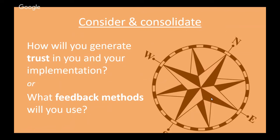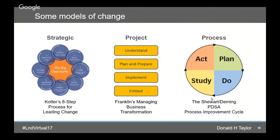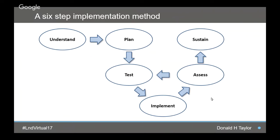We do need a method. Talking to people, I've come up with one model — not patented, anyone can use it, simply a reflection of good practice. These six steps are what successful implementers go through: first, understand the issues; then plan; test a beta product; implement; assess whether you met your initial aims; and either sustain it or — more likely in agile development — loop through test, implement, assess several times before entering the maintain or sustain phase. That's it.